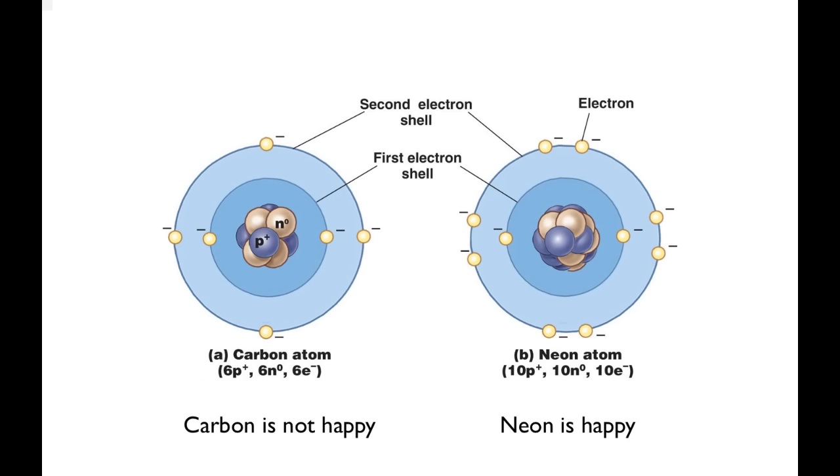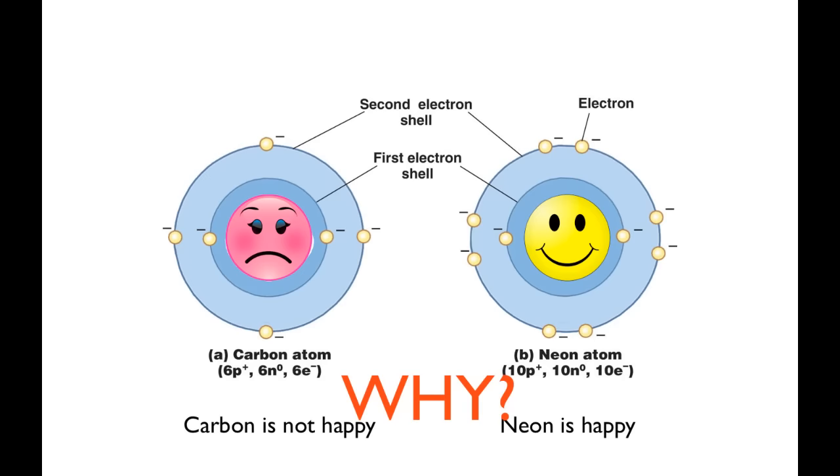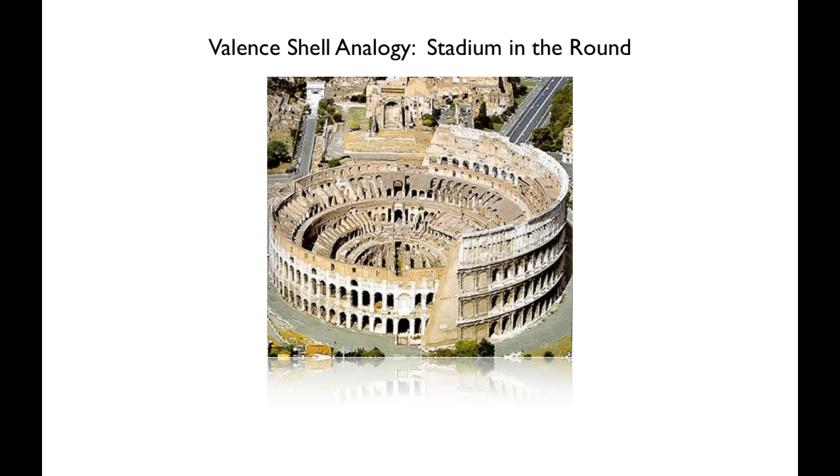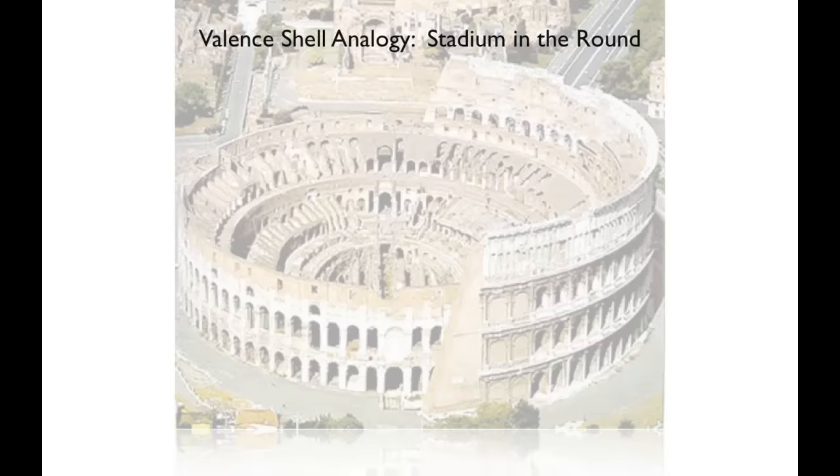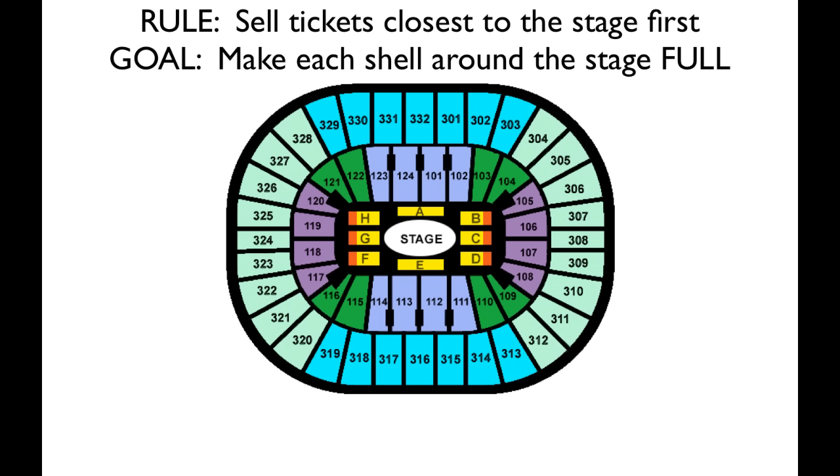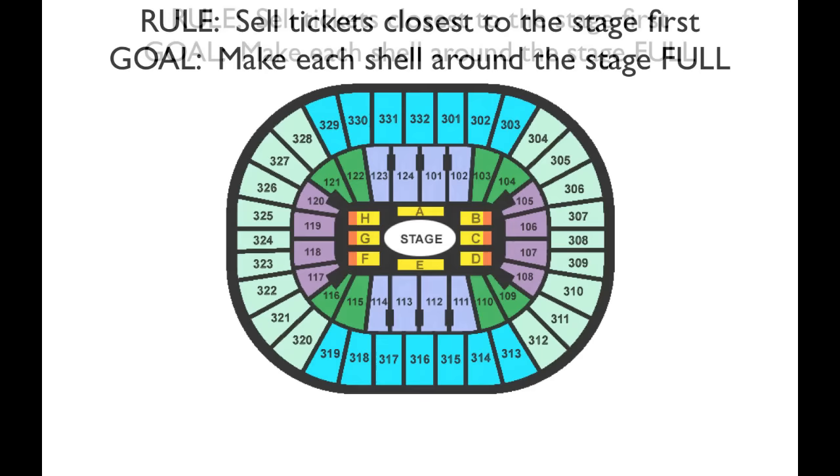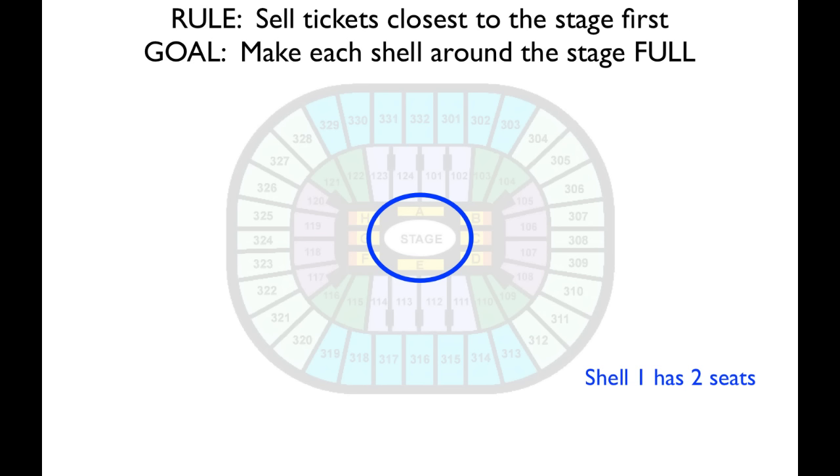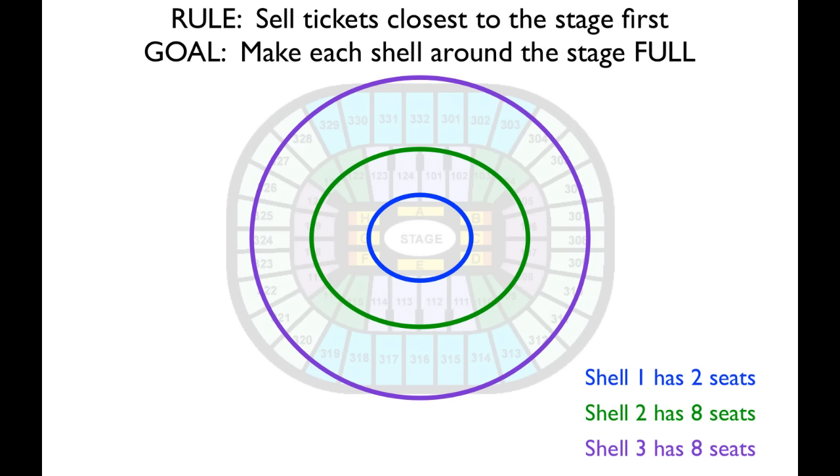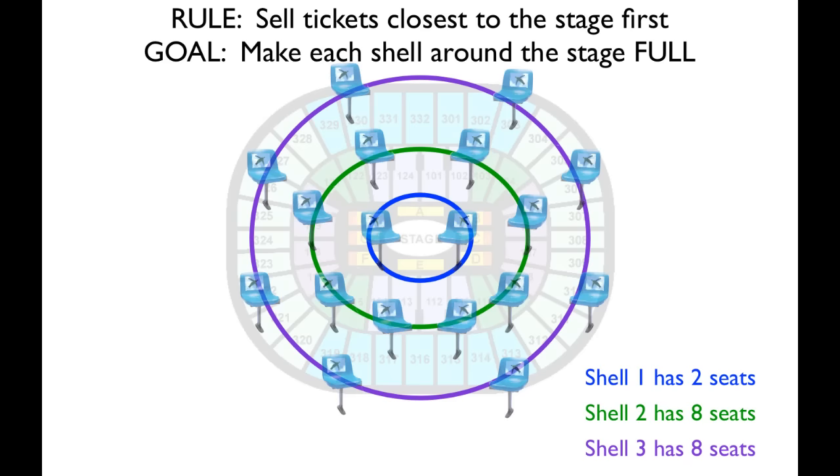As we go through this, we're going to see that carbon is not happy by itself, whereas neon is. We're going to see why. My analogy for this is a stadium in the round. So a stadium with a stage inside and spectators all the way around. And of course, we're going to have penguins in there too. So we're going to have a rule and a goal. The rule is we're going to sell tickets closest to the stage first. The goal is we want to make each shell around the stage full of spectators. Now, in our little theater, it's going to be a very little theater. The first shell is only going to have two seats in it. The second shell is going to have eight seats. And the third shell is also going to have eight seats. So just go with me on this. It's a small, intimate theater. So here are our seats. We're going to look at different scenarios and see what it looks like.